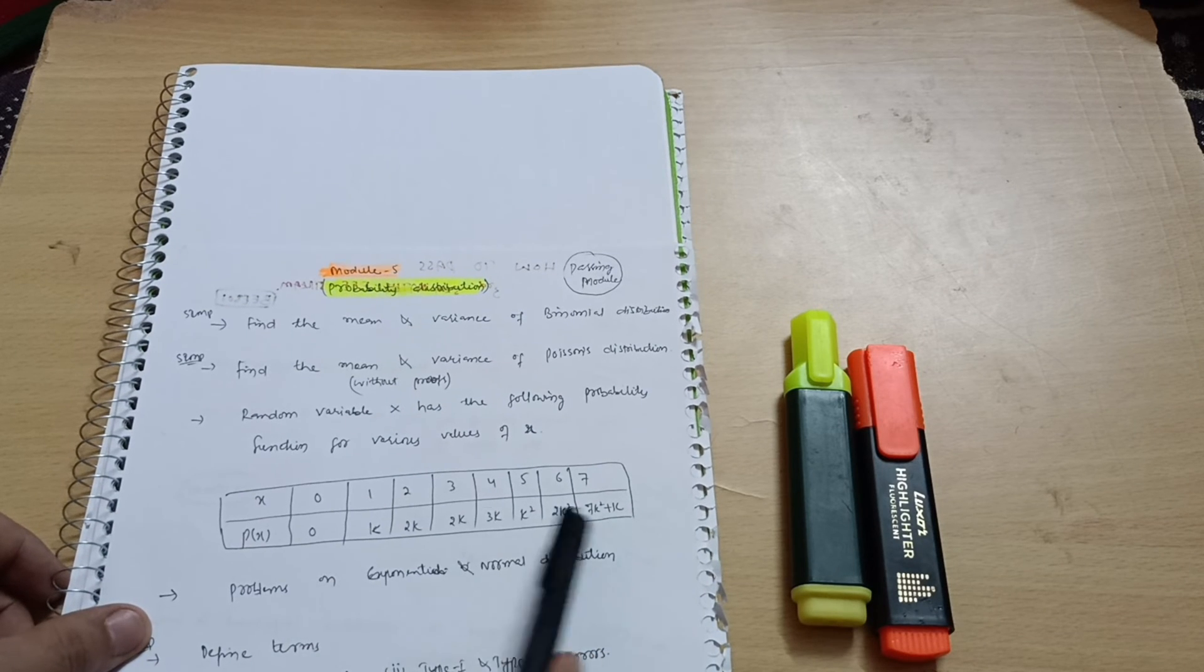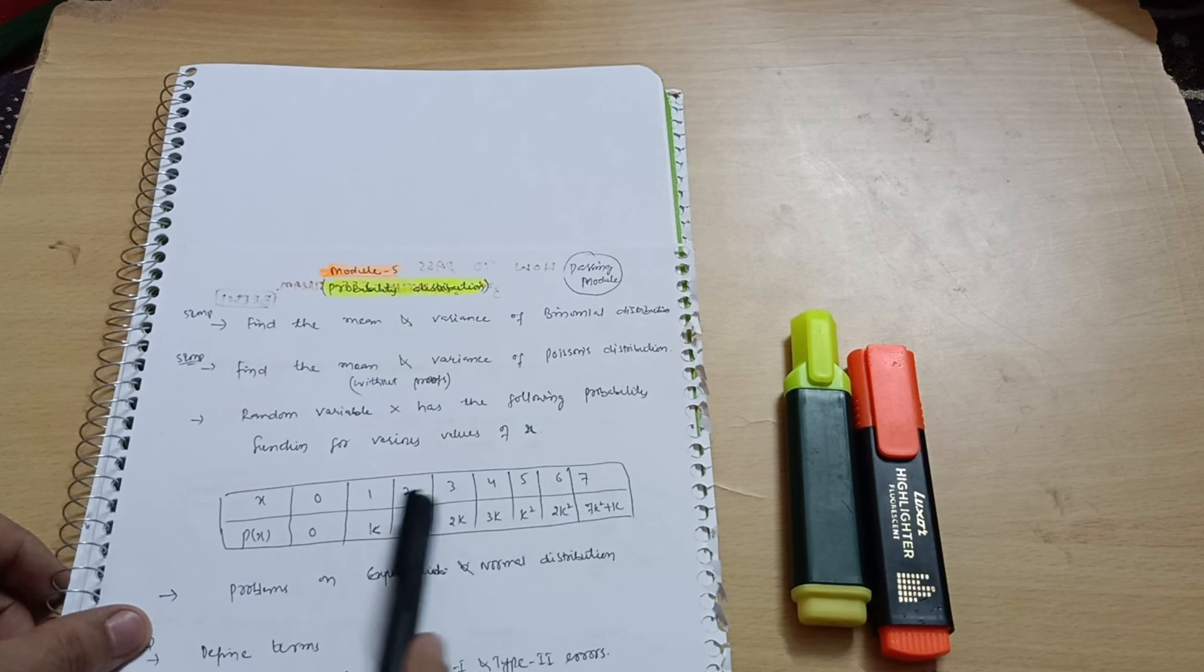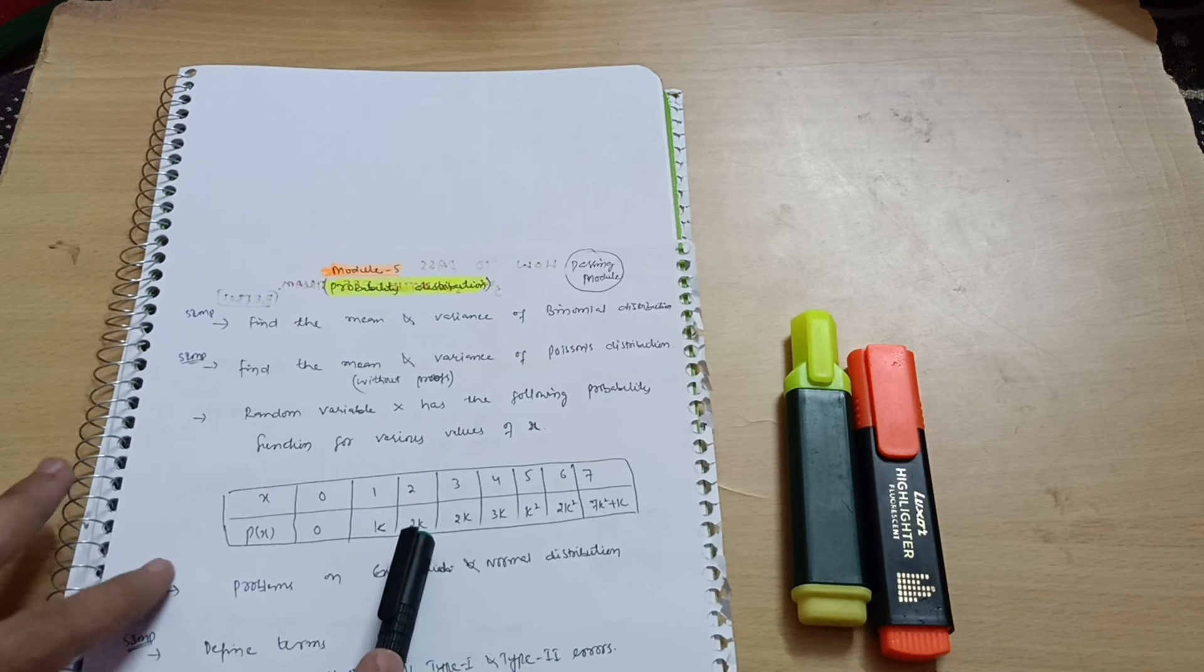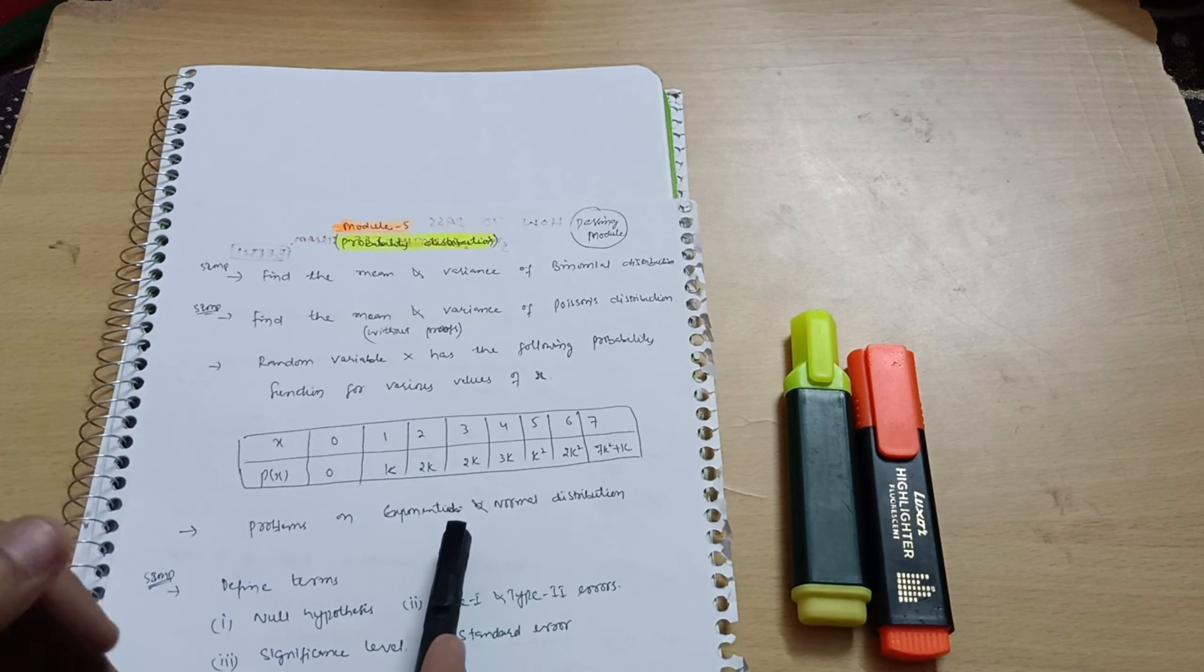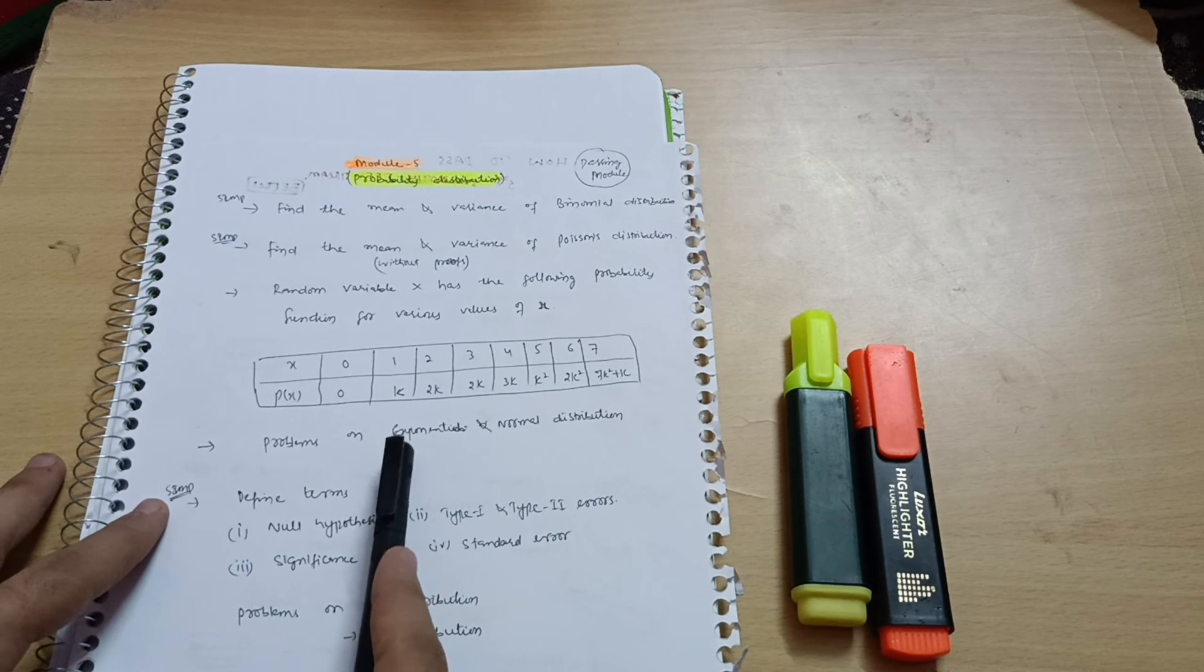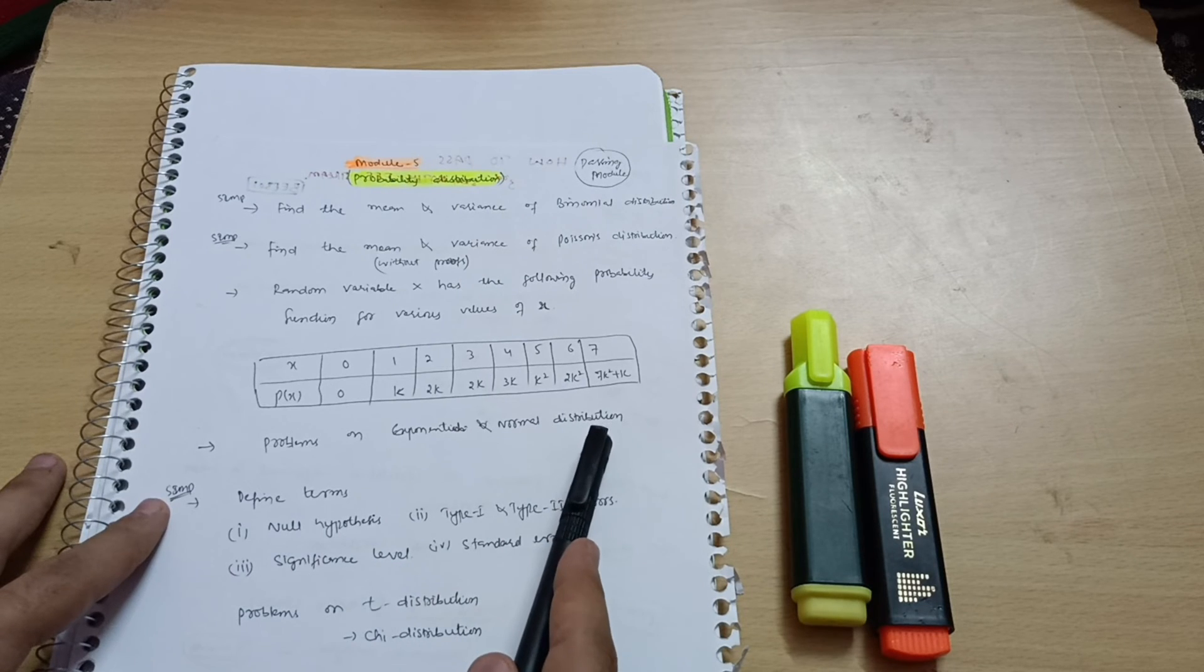Where you are supposed to calculate the k values. These are the probabilities given for the x values. You are supposed to calculate only the k value. Very simple problems are there. Either you have the option over there, you can go through R part, but before that you should cover exponential and normal distribution problems.